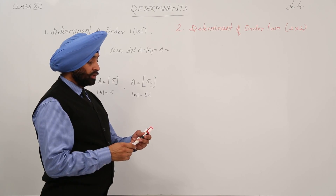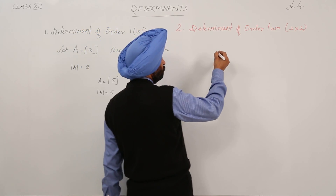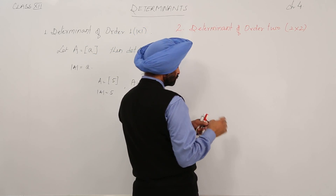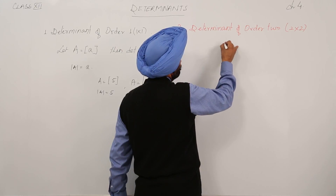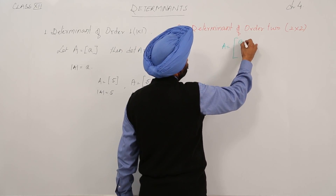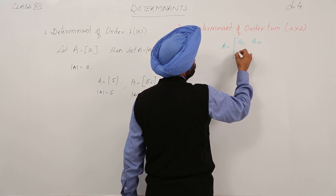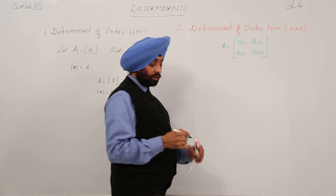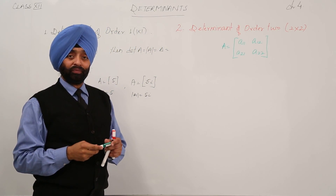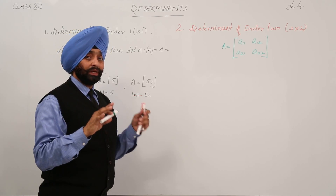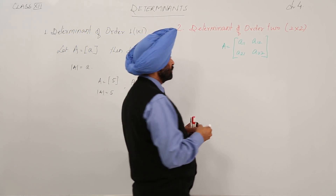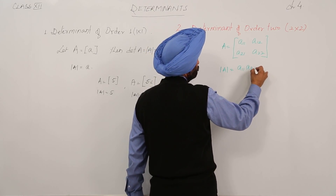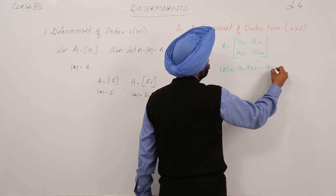Determinant of order 2×2. We are having again a square matrix. Capital A is equal to [A11, A12; A21, A22]. The determinant of this square matrix is equal to A11 × A22 minus A21 × A12.